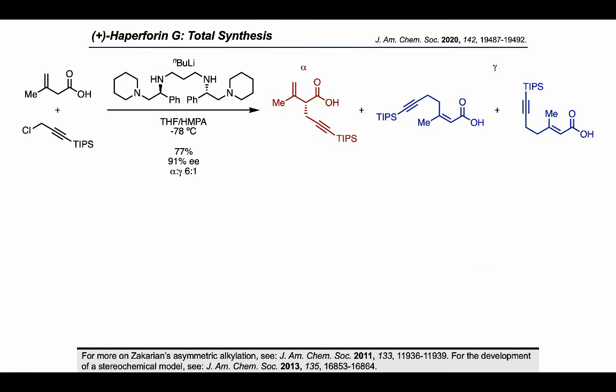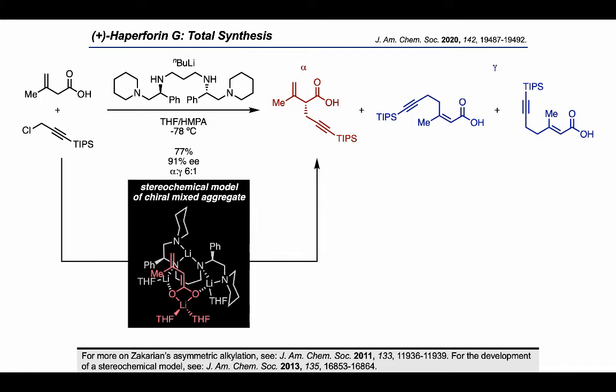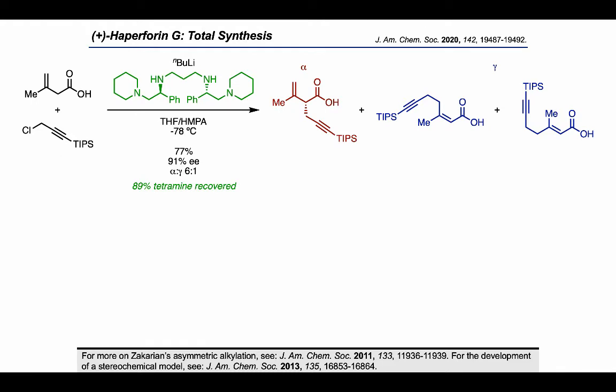The first step in the synthesis is an asymmetric alkylation of a carboxylic acid using the chiral tetramine pioneered by the Zakarian group. This alkylation provided the enantioenriched alpha-propargylated carboxylic acid as the major product, although a small amount of the gamma-alkylated products were formed as well. On the basis of mechanistic work by the Zakarian group, a stereochemical model for the chiral mixed aggregate was proposed, where the tetramine coordinates to lithium ions that hold the enediolate as shown, leaving only the face of the enediolate opposite the aggregate exposed. As an important practical consideration, 89% of the tetramine could be recovered after the reaction.